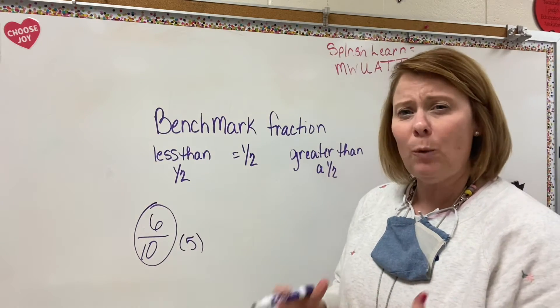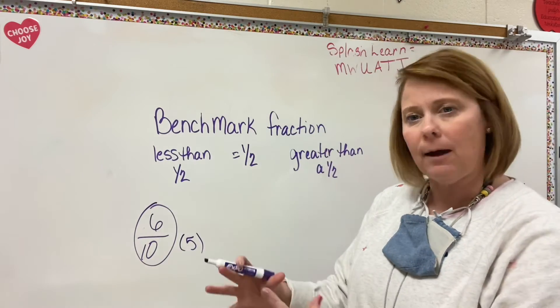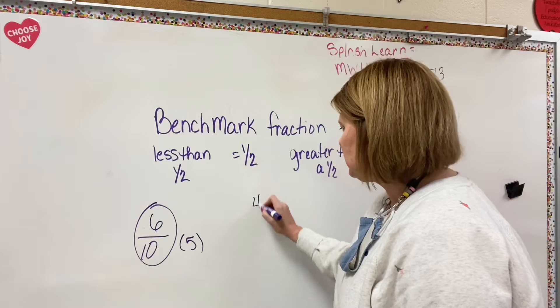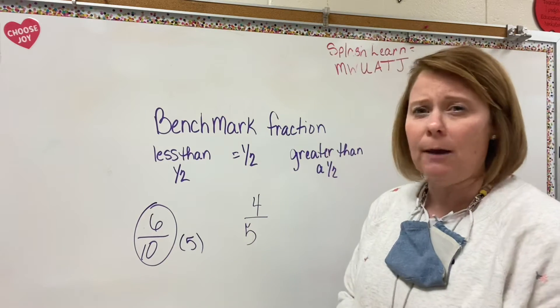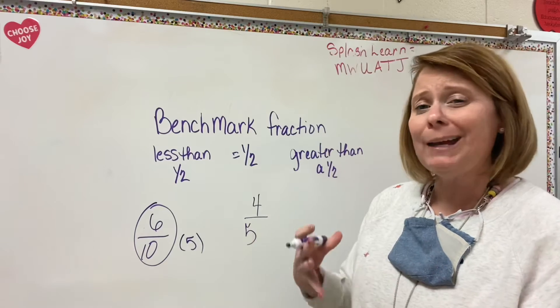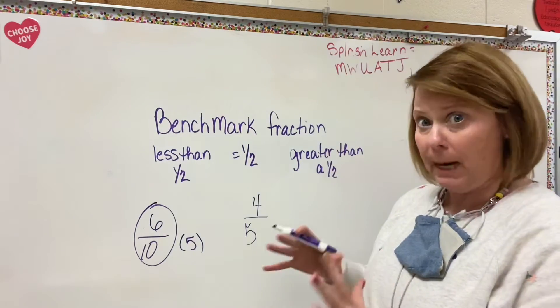What happens if you have a denominator that doesn't have a clear half? Let's try one. Let's do 4 fifths. There is no clear half of 4 fifths. So I can kind of estimate, or I can divide 5 by 2.